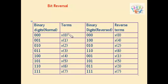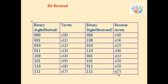When we reverse 000 we again get 000, so it maps to x(0). When we reverse 001 we get 100, which corresponds to x(4). Continuing this bit-reversal for all remaining indices, the reverse terms are: x(0), x(4), x(2), x(6), x(1), x(5), x(3), and x(7).